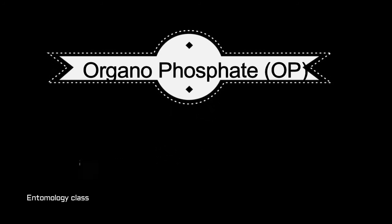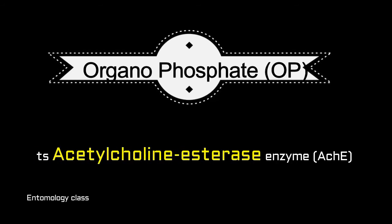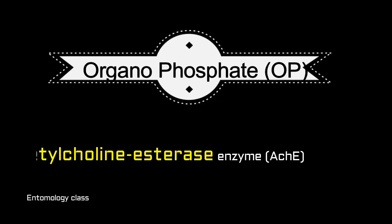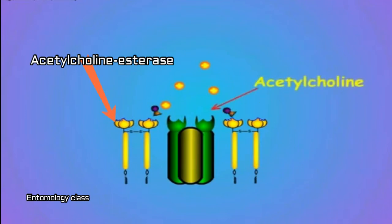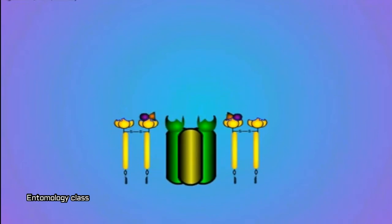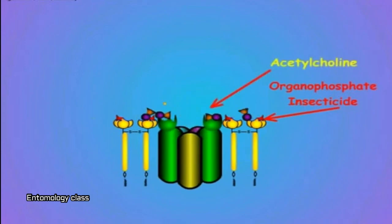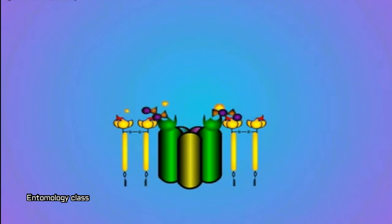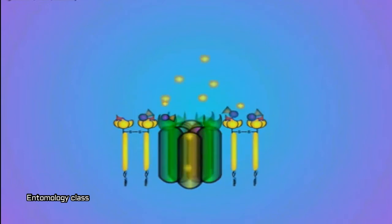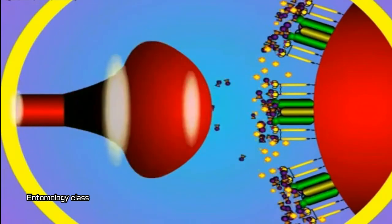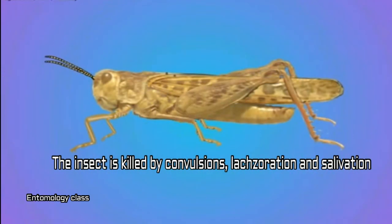Organophosphate insecticides inhibit the acetylcholinesterase enzyme. The enzyme acetylcholinesterase is important to dislodge the neurotransmitter, i.e. acetylcholine, from the post-synaptic neuron, so that information transfer is continuous. As the organophosphate insecticides inhibit the acetylcholinesterase enzyme, it results in the accumulation of neurotransmitter acetylcholine in the synaptic junction. As acetylcholine will keep the ion channels open forever in the absence of acetylcholinesterase, the insect is killed by convulsion, salivation, and laceration.